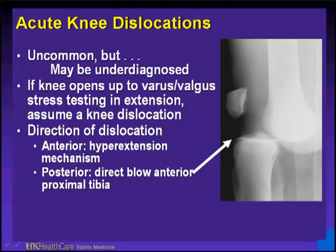Acute knee dislocations are uncommon but may be under-diagnosed. If you're covering a football game on a Friday and someone has had an anterior, posterior, or multi-ligament knee injury, you should call the emergency room and make sure they have the ability to do a vascular workup. If the knee opens up to varus or valgus stress testing in extension, it is a knee dislocation until proven otherwise. Direction can be anterior with a hyperextension mechanism or posterior with a direct blow to the anterior proximal tibia.